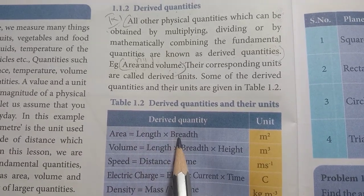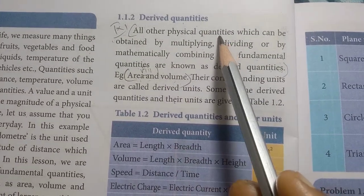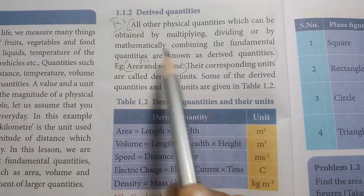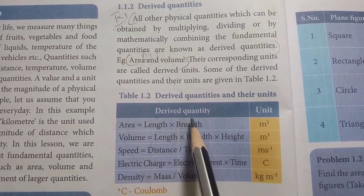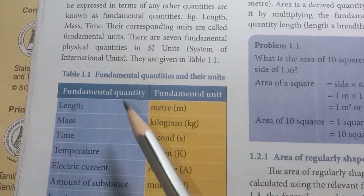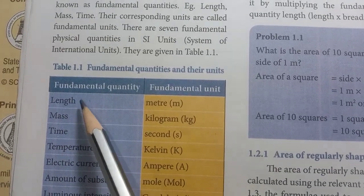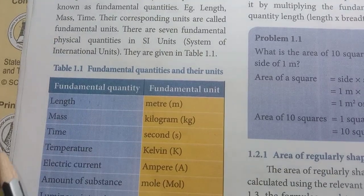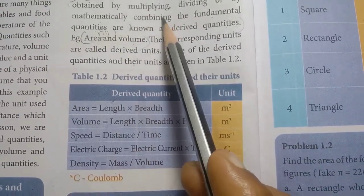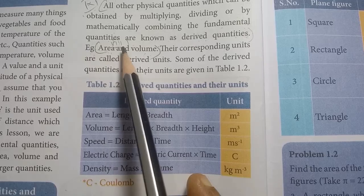For example, length and breadth multiplied gives area; distance divided by time gives speed. The fundamental quantities include length, mass, time, temperature, and electric current. When we multiply or divide or mathematically combine these fundamental quantities, we get derived quantities. Example: area and volume.